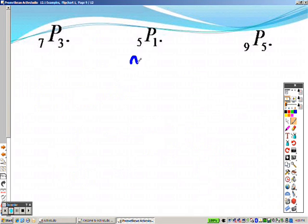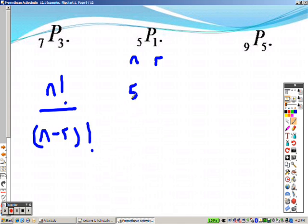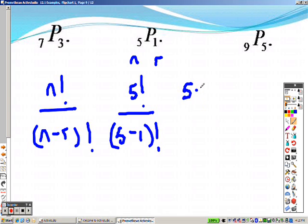5, 1, remember that's N and that's R. So according to the formula, that's N factorial over N minus R factorial. So it's like saying 5 factorial over 5 minus 1 factorial. And that is like saying 5 factorial over 4 factorial.